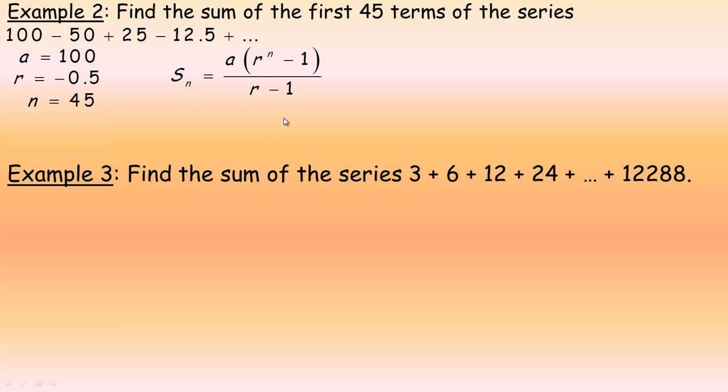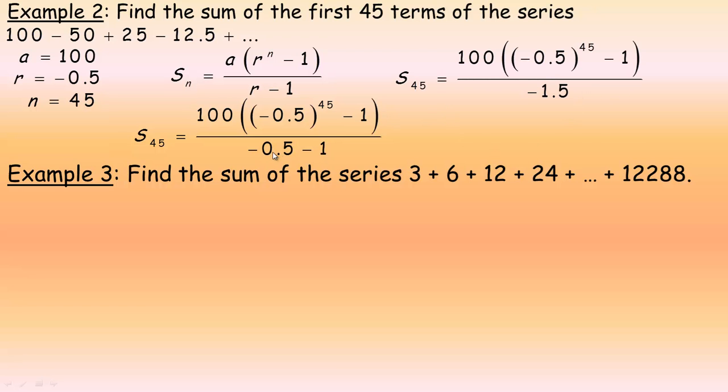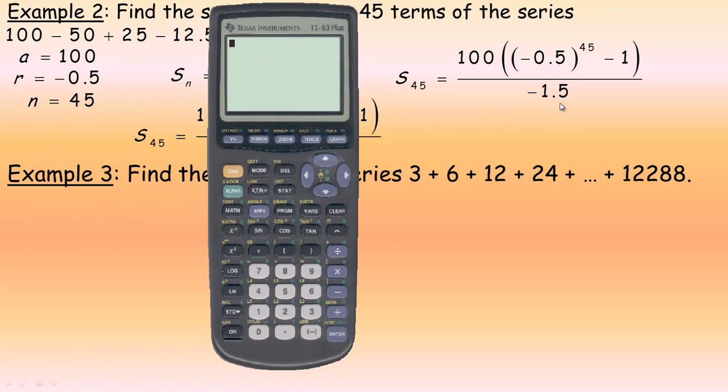So, here's the sum formula for a geometric series. And so, we fill in all the values. S45 would be a is 100. And then it's negative 0.5 raised to the power of 45, because n is 45, minus 1 over negative 0.5 minus 1. And so, I just simplified the denominator. Negative 0.5 minus 1 would be negative 1.5. So, evaluate this. Now, notice the base is negative. So, make sure you do that properly. Raise to the power of 45. And then, of course, minus 1 afterwards.